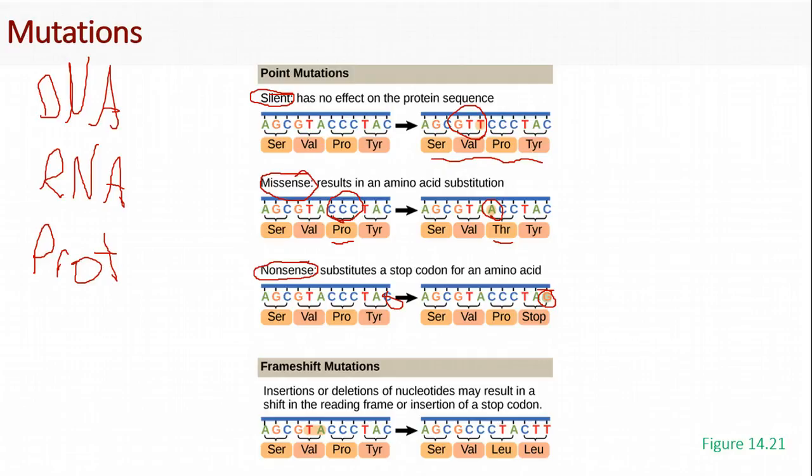And finally, we have frameshift mutations. This is a group of mutations where we have an insertion or a deletion of a nucleotide, and that can result in an actual whole shift in the frame of our ribosome reading. Here we have the insertion of nucleotides. So you'll see this results in serine, valine, and instead of a proline and tyrosine, we're actually starting to code for two leucines. This is going to mess up the rest of the protein because of that insertion of nucleotides.